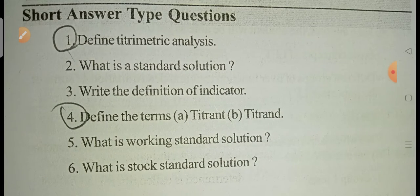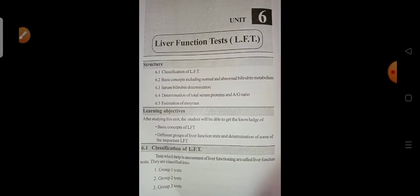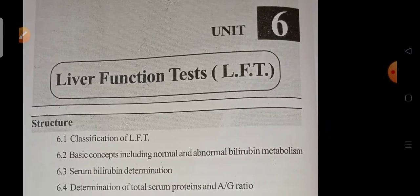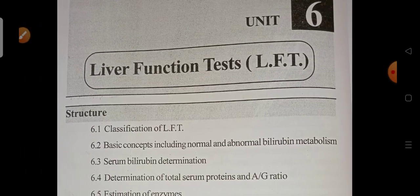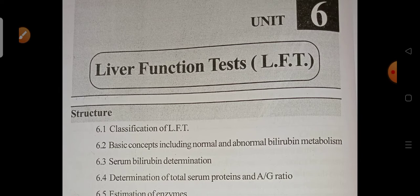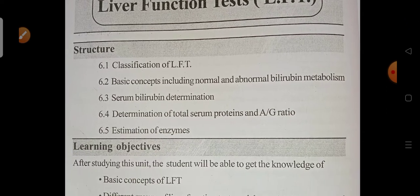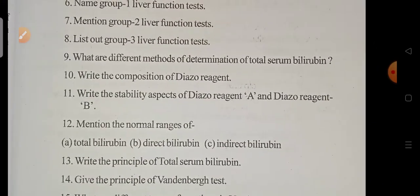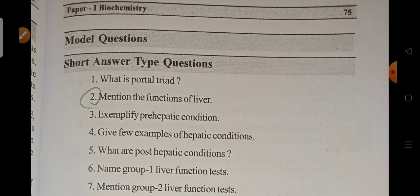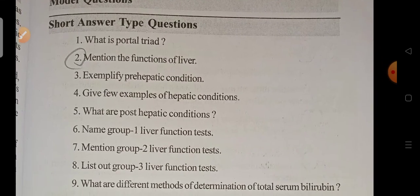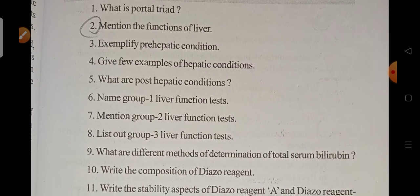Unit 5 is Titrimetric Methods. The two important questions are: define titrimetric methods, and define the terms titrant and titrate. For Unit 6, Liver Function Test (LFT), an important short answer question is: mention the functions of the liver.